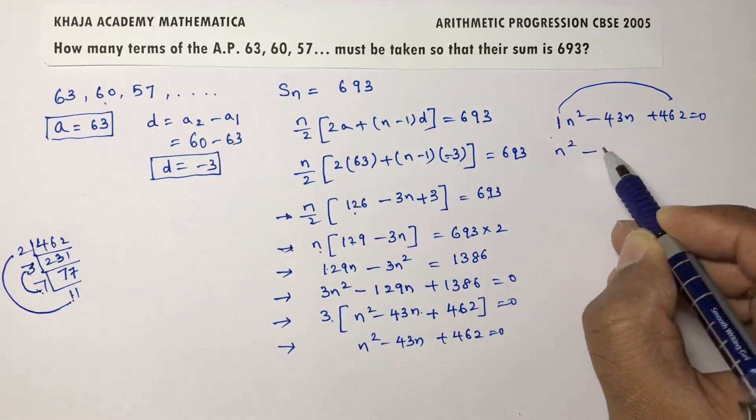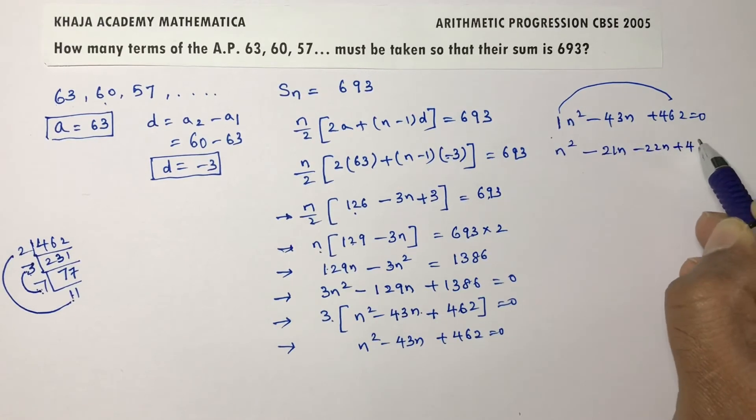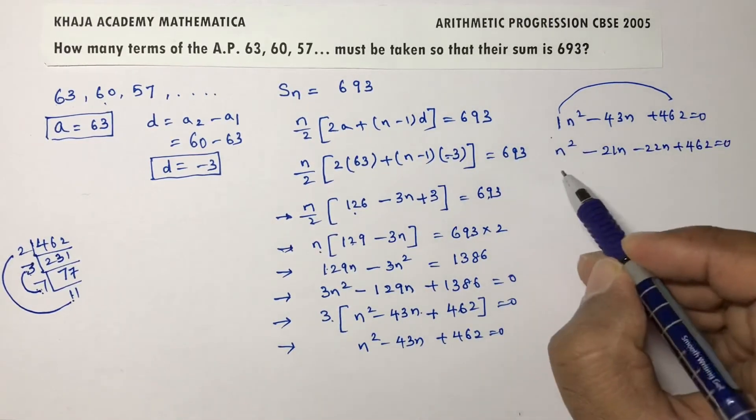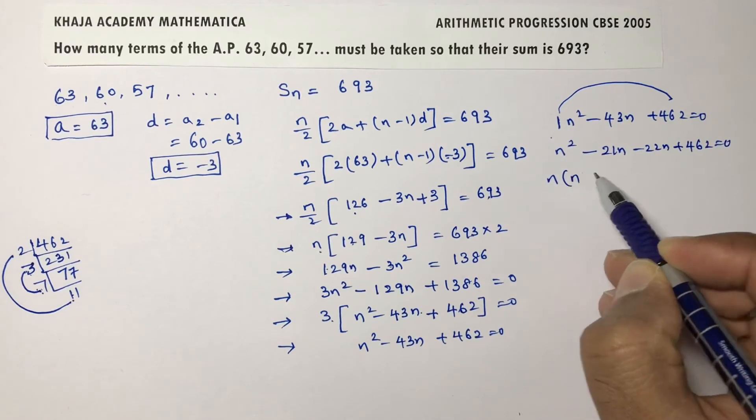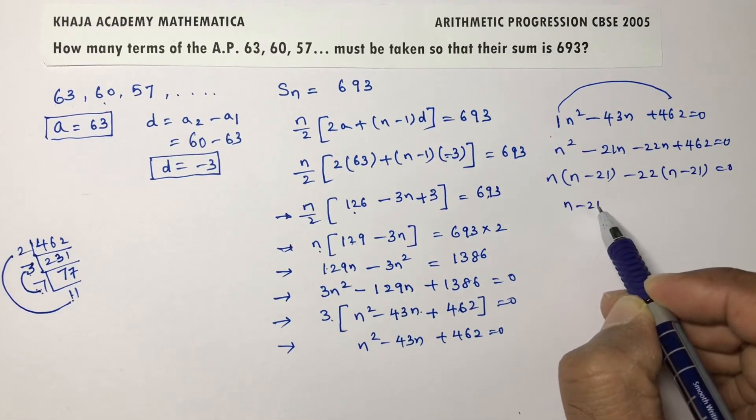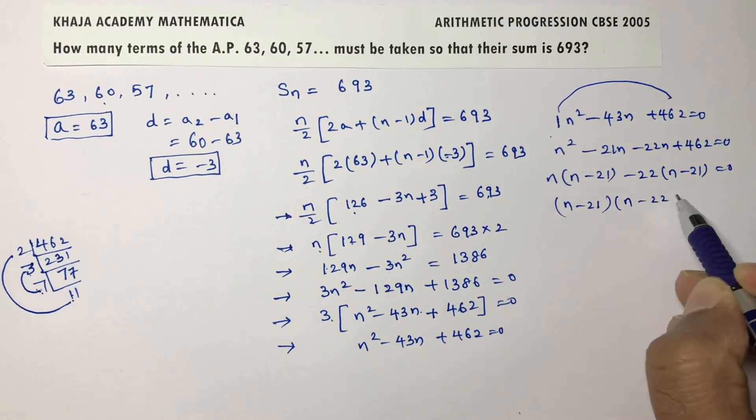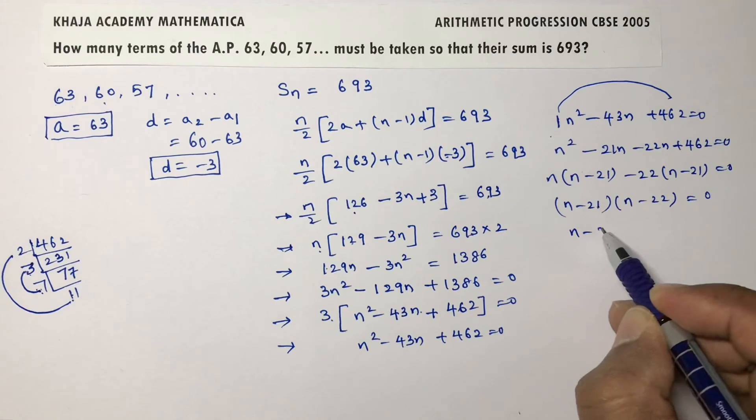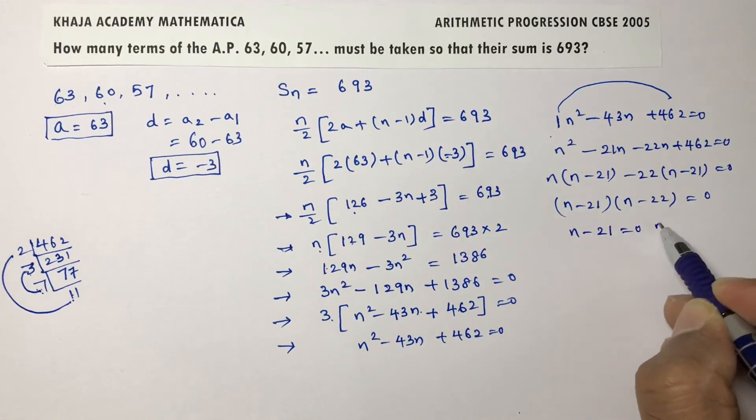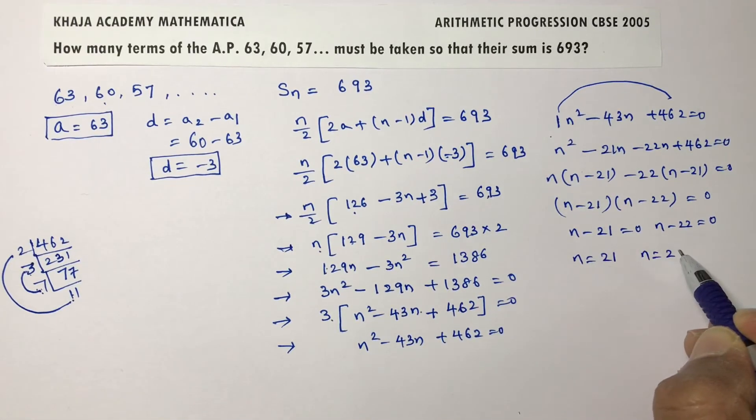n square minus 21n minus 22n plus 462 equals 0. n into n minus 21 minus 22 taken common, n minus 21. So n minus 21 into n minus 22 equals 0. n minus 21 equals 0, n minus 22 equals 0. So you're getting n equals 21, n equals 22.